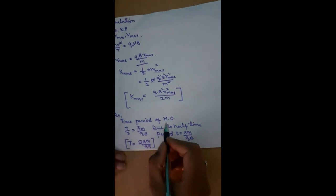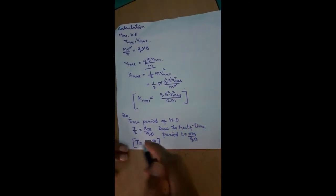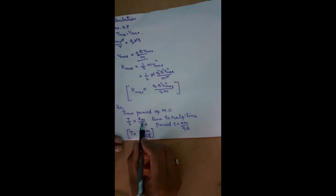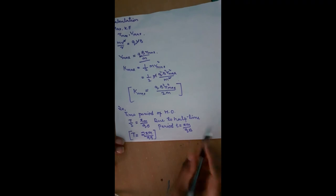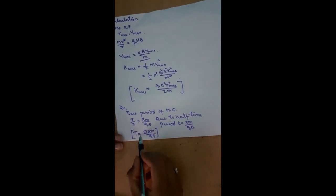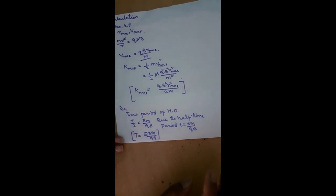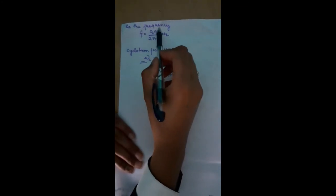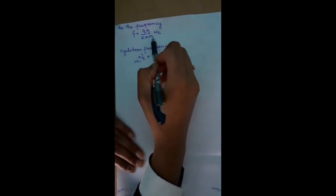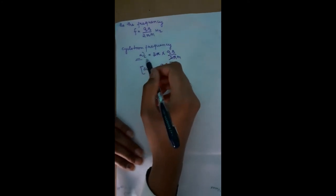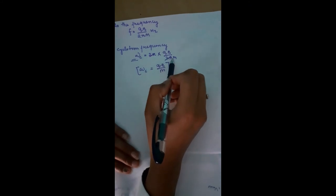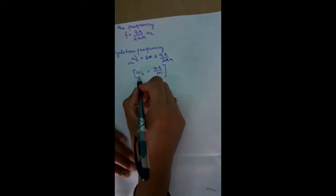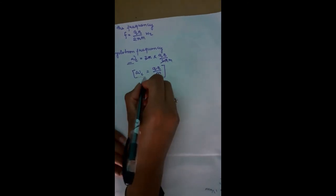Time period of high frequency oscillations: T/2 equals πm/Qb. Due to half time period, T equals πm/Qb. Therefore, T equals 2πm/Qb. The frequency f equals Qb/2πm hertz. Cyclotron frequency ωc equals 2π times Qb/2πm. So ωc equals Qb/m. This is the cyclotron frequency.